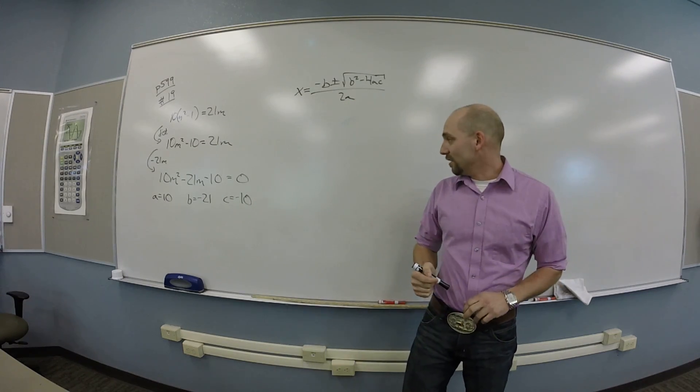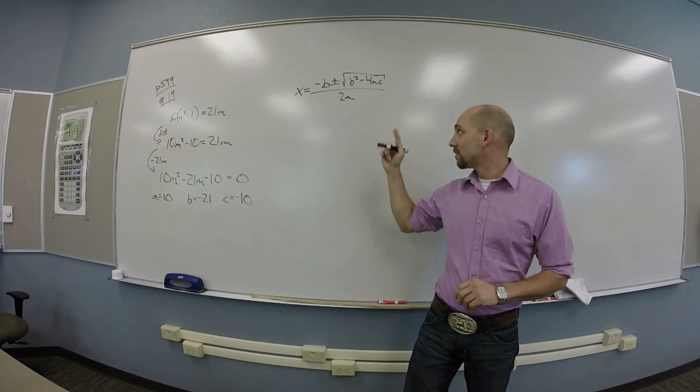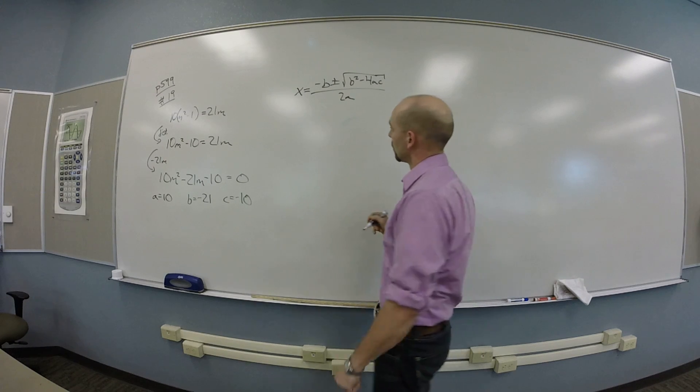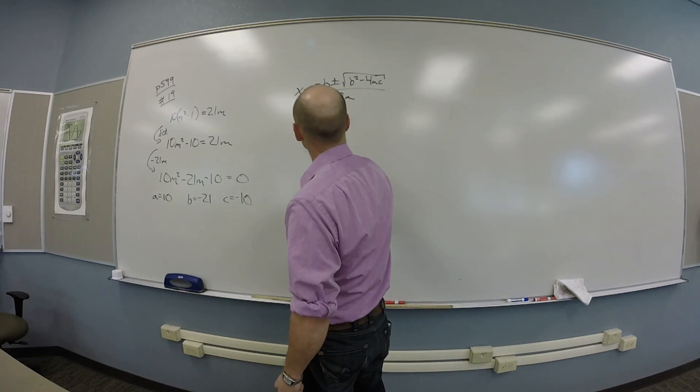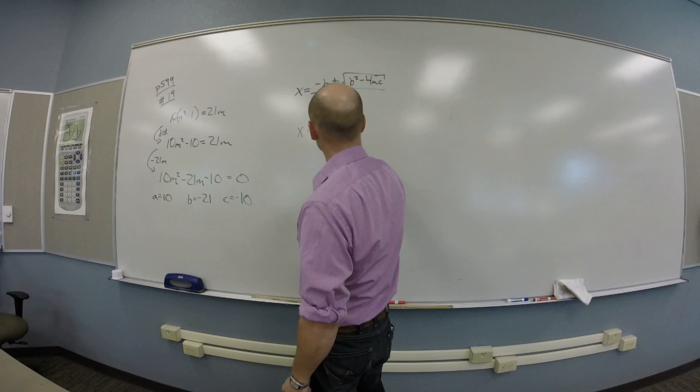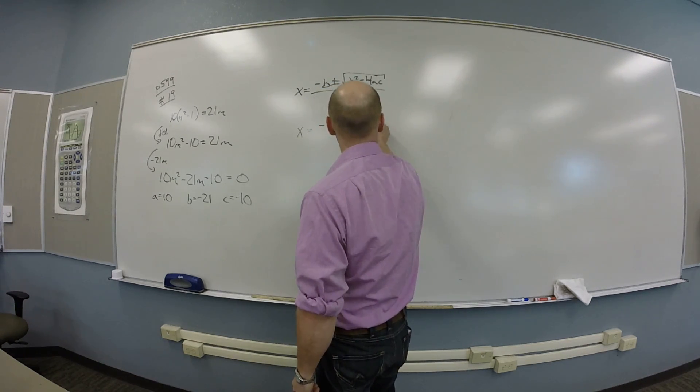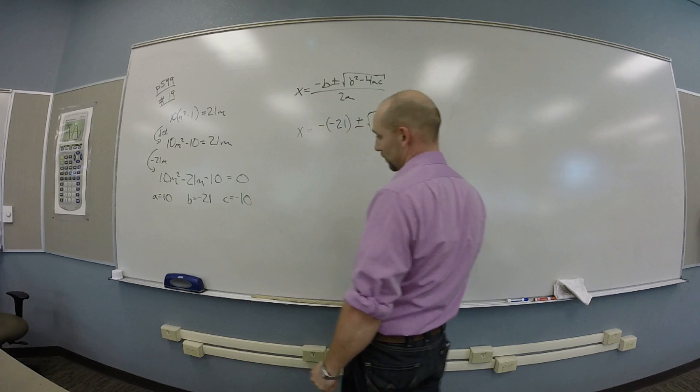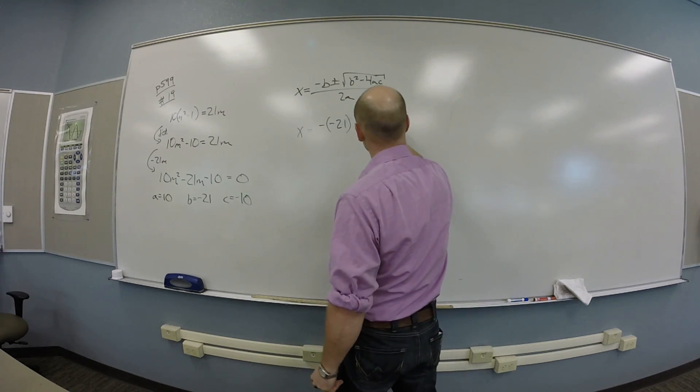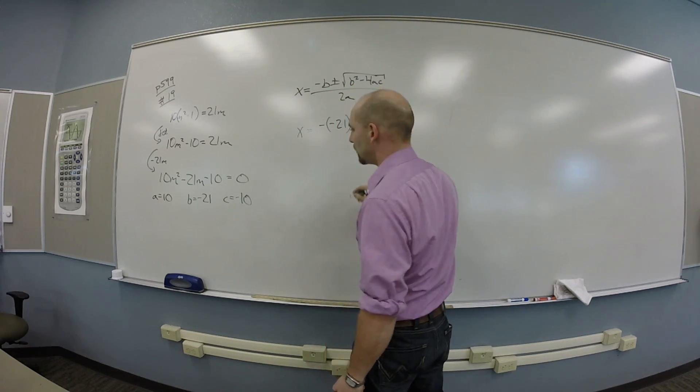All right. Now I, what? Plug it all in. Stick those in there. Okay. So I find out that x is negative negative 21 plus or minus the square root of negative 21. Right? You changed from m to x. Oh, I did, didn't I? You guys see that? I totally dorked the variable. We should totally change it.